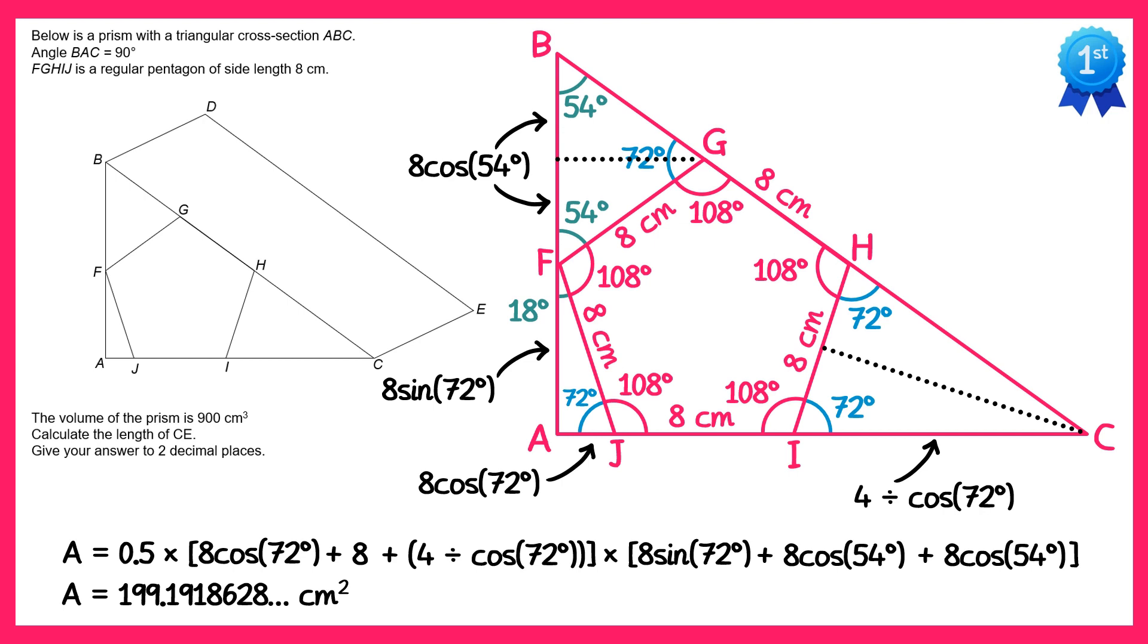In the question we're told the volume of the prism is equal to 900cm³, and we're asked to calculate the length from C to E. So if we know the cross sectional area we can find the length CE by dividing the volume by this area. So CE equals 900 divided by this cross-sectional area, which gives you the answer 4.52. The question asks us for two decimal places. And that's your answer to the question.